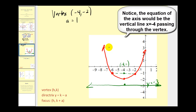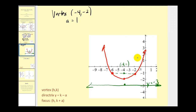We could find additional points by making a t-table, but we did all of this with a minimal amount of calculations. If you can make sense of why the focus is here and why the directrix is here, we don't have to worry about memorizing all of these different formulas and rules to determine where these key components are located.